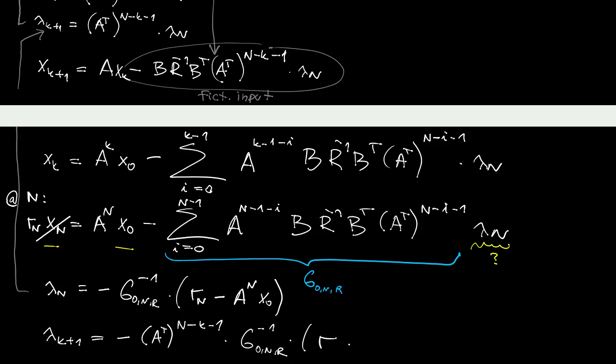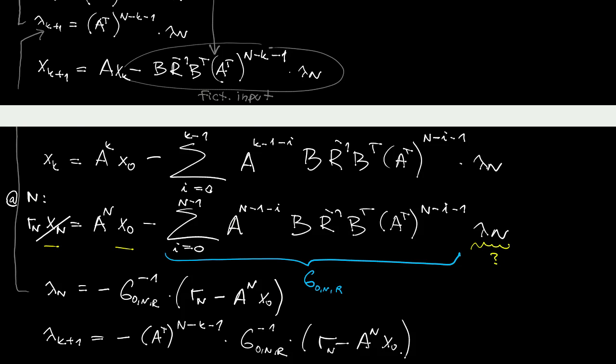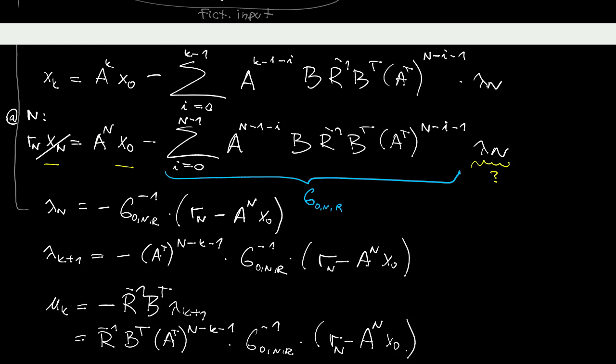And finally, the control signal depends on lambda at k plus 1. Therefore, we can write it down as this. And that's essentially it. That is the needed expression for the optimal control.